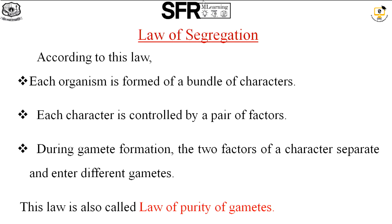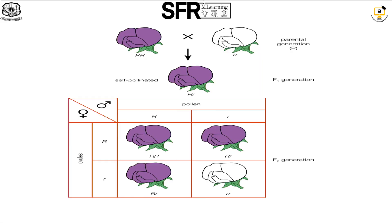In this image, there is a violet color flower and a white flower. These are pure breeding plants. When we breed the two, we get a violet flower in the F1 generation. Segregation means that the two factors — the same characters — go through gametic formation and fuse. One character is expressed. This is the law of segregation.